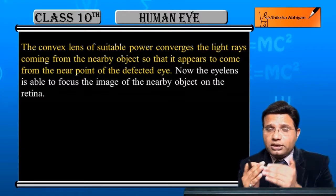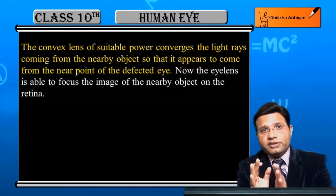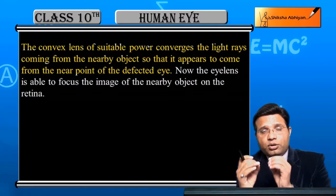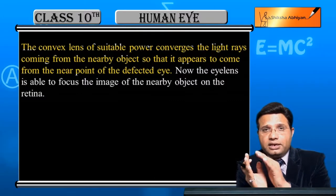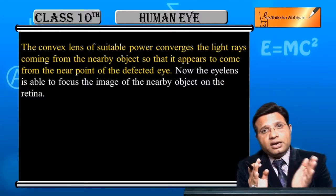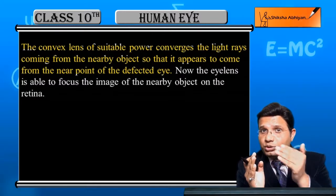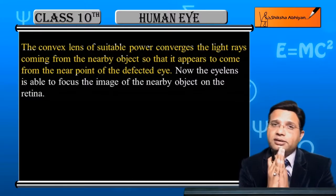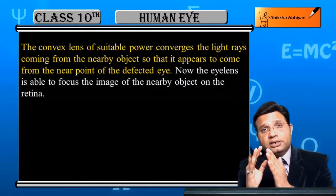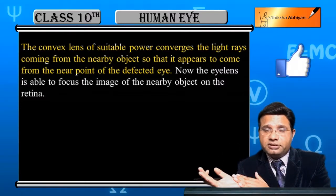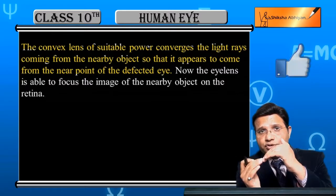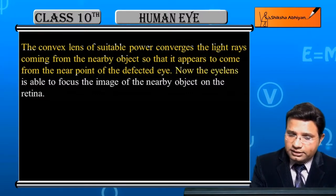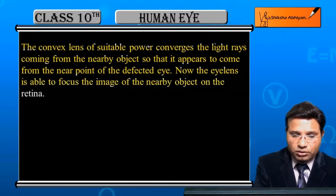The convex lens converges the light rays from the nearby object so that they appear to come from the near point, which is 25 cm away. Now, the eye lens is able to focus the image of the nearby object on the retina.